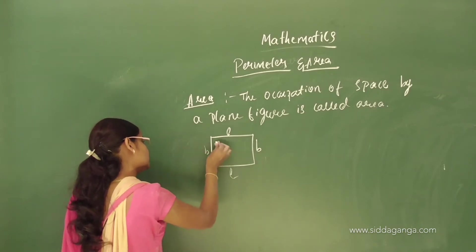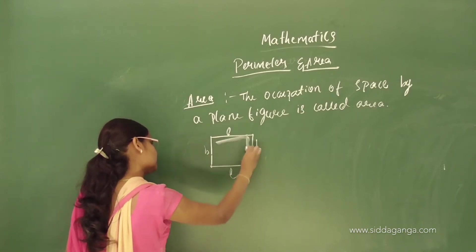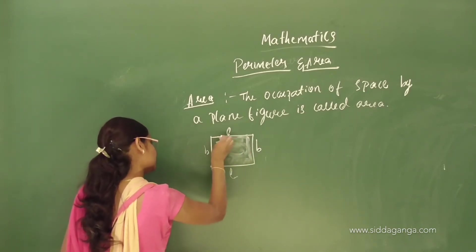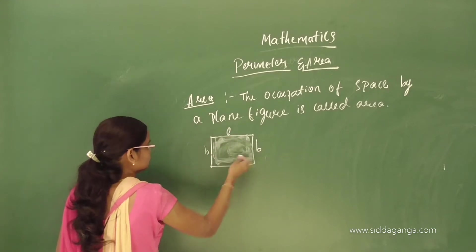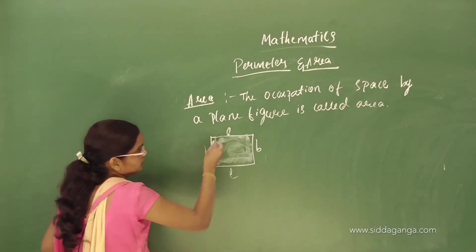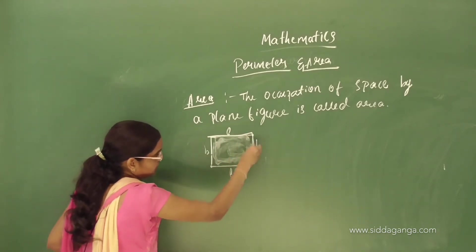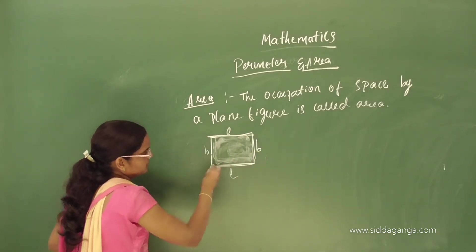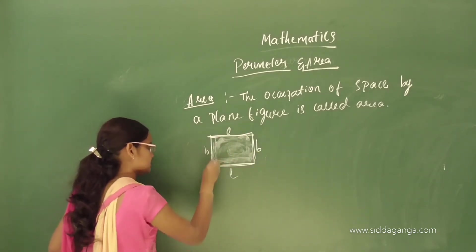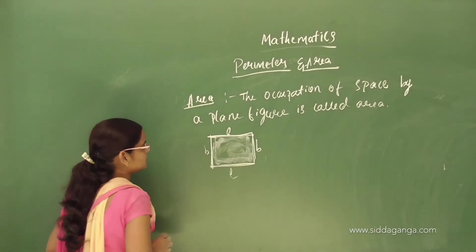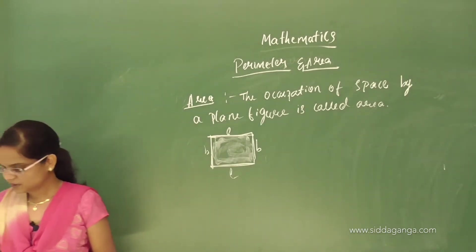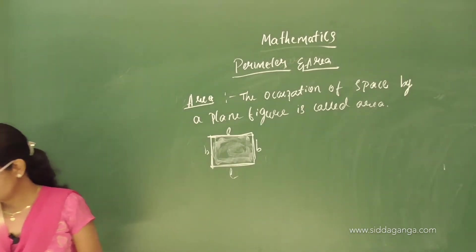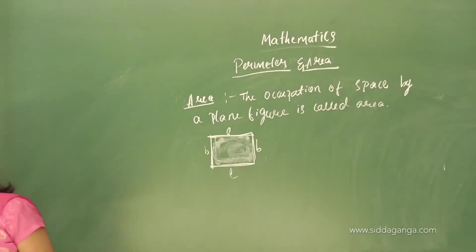If it is a rectangle, we'll see the space. This is a rectangle. The area means the inner space. The outer length is the perimeter. That is the difference between area and perimeter — area is the inner occupation.